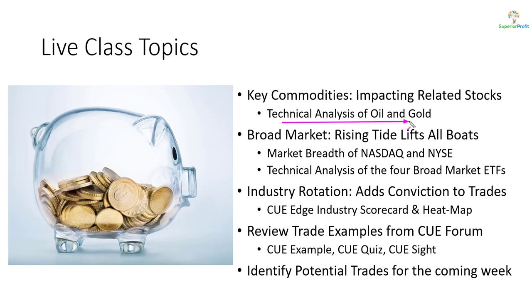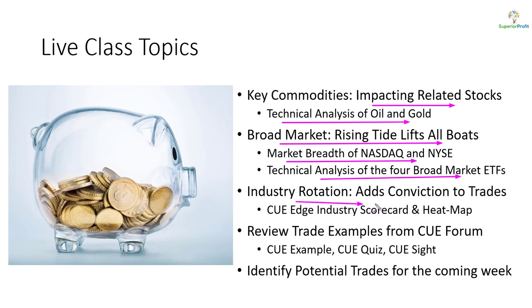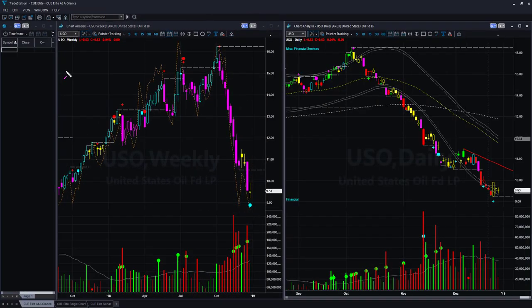In today's topics we'll look at oil and gold — these two commodities using technical charts — as they tend to impact related stocks. When swing trading stocks, we like to trade in the direction of the market. We will study market direction using NASDAQ and NYSE market breadth and technical analysis of market ETFs. We also align trades with industry strength, studying it using the QH industry scorecard and heatmap. We may look at recent trade ideas and potential trades for the coming week.